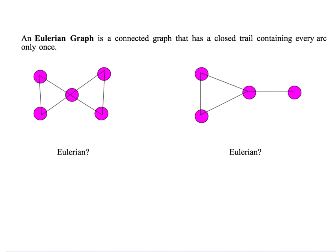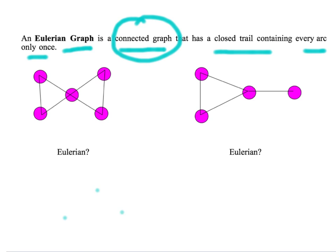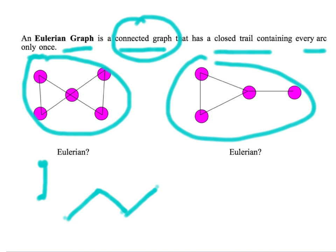We have two definitions of whether a graph is Eulerian. The first is that we're working with a connected graph that has a closed trail that contains every arc only once. A connected graph means we can get from one node to the next. A closed trail means we go arc to arc and begin and end at the same place, using each arc only once.